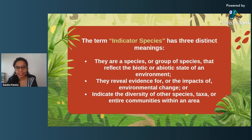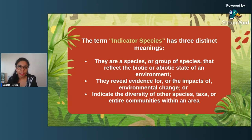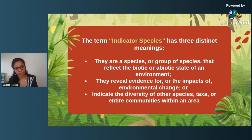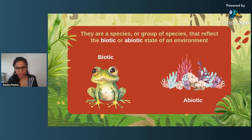Indicator species have broadly three meanings. They are species or a group of species that reflect the biotic and abiotic state of an environment. They also reveal evidence for, or the impacts of, environmental changes. And they indicate the diversity of other species or taxa in that entire community. Let's look at each of these definitions.